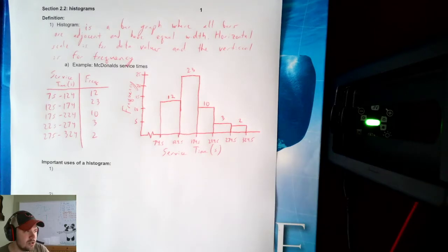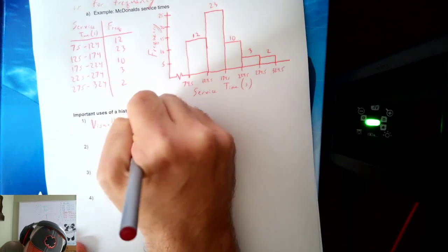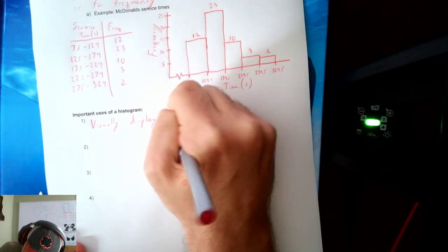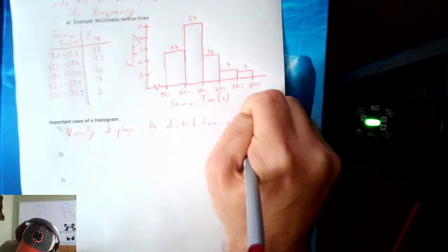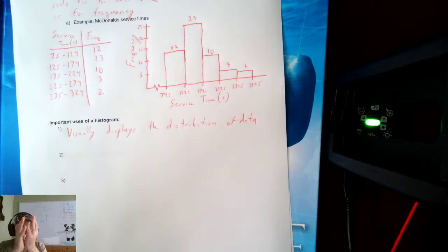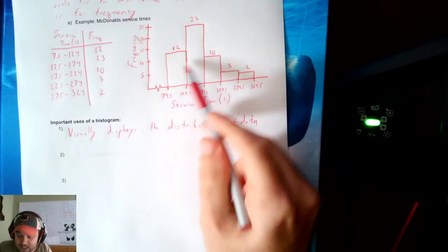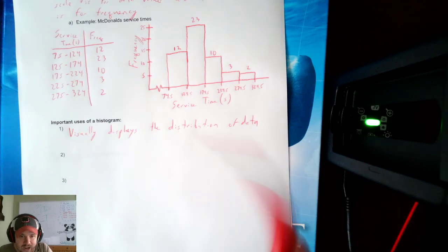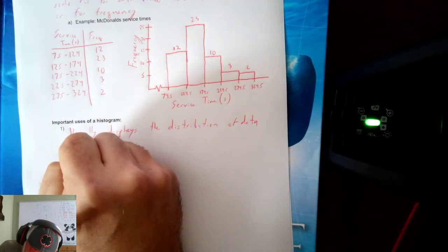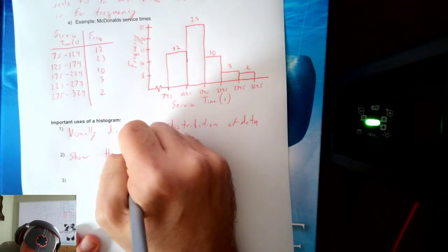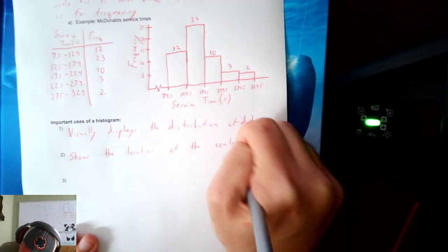What are some uses of histograms? Now, why do we use histograms? First, it visually displays the distribution of data. It shows whether the data are spread out or bunched up. If we look here, there's a big bunch right here. It's the biggest chunk of data right here. As we go up towards the bigger numbers, it trails off. I can see the distribution of the data.